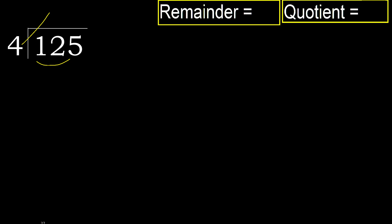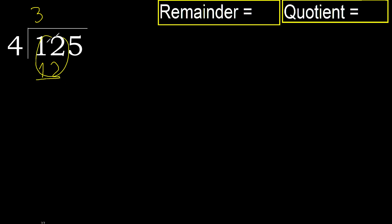4 multiplied by 4 is 16 — 16 is greater. 4 multiplied by 3 is 12 — it is not greater. Subtract. Next, bring down the 5, eliminating the 0 on this side.